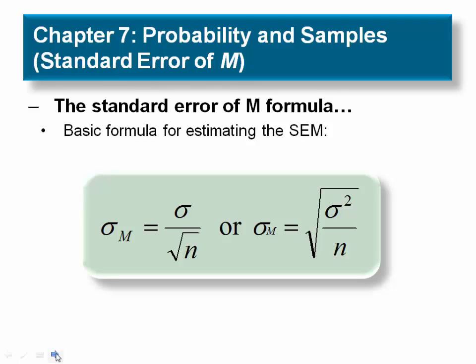On the slide is the standard error of M formula. To calculate SEM, we divide the population standard deviation by the square root of the N. Remember that N stands for the number of cases we have in the sample.